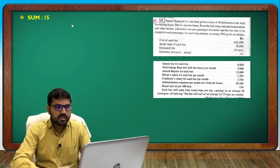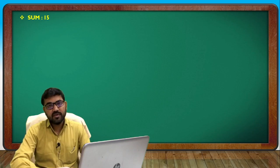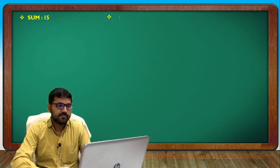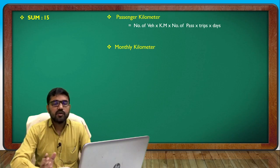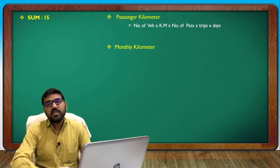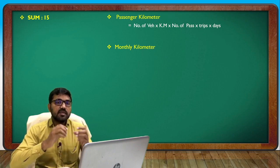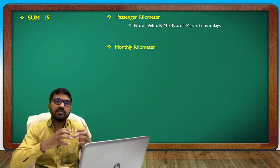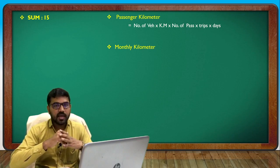To calculate passenger kilometers and diesel oil, if you want to find passenger kilometers, you can find a monthly kilometer figure. The number of vehicles multiplied by kilometers multiplied by number of passengers multiplied by trips multiplied by days.